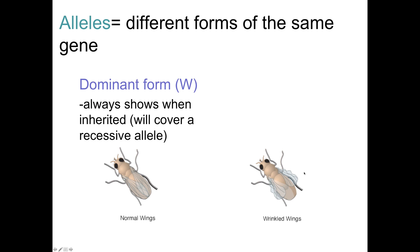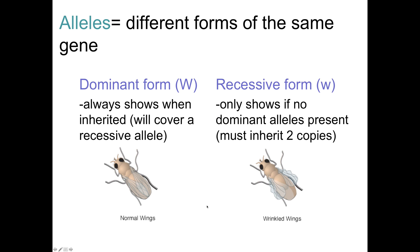The dominant form — the normal-shape protein — will always be present or shown in the phenotype if it is inherited. All it takes is inheriting one copy of a dominant allele from one parent to show the dominant phenotype; it will cover up any recessives inherited. The wrinkled wing is recessive, which means the only way for it to show up in the physical appearance is if you do not have any dominant alleles present. You would have to inherit two copies of the mutant form of the gene to get wrinkled-winged flies.